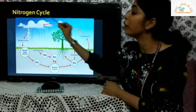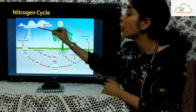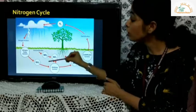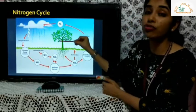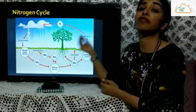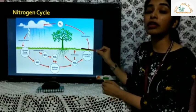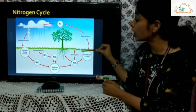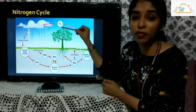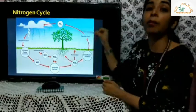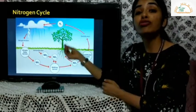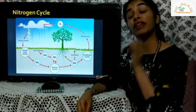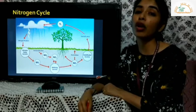Once converted, nitrates and nitrites are absorbed by plants. Animals feed on these plants, taking in the nitrogen. When these animals die, nitrogen enters the soil again. From the soil, denitrification bacteria convert it back into atmospheric nitrogen, completing the cycle. This is why we refer to it as cyclic movement of nutrients.